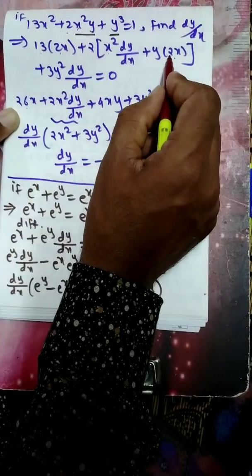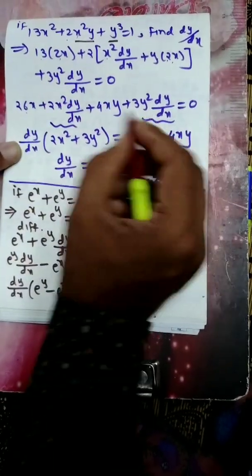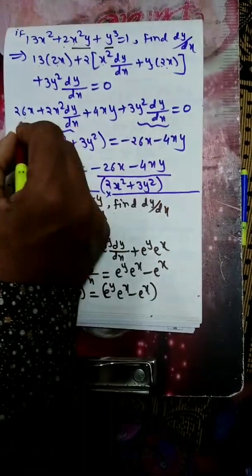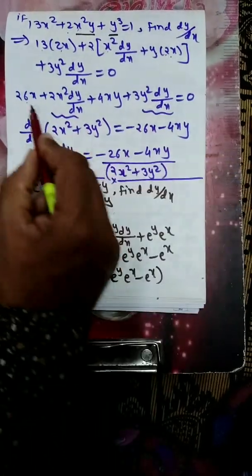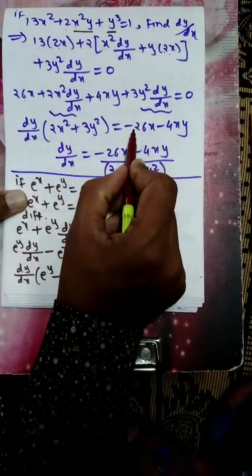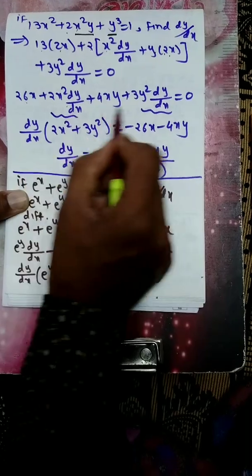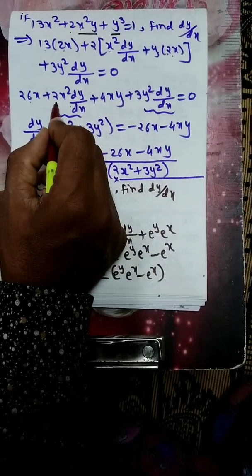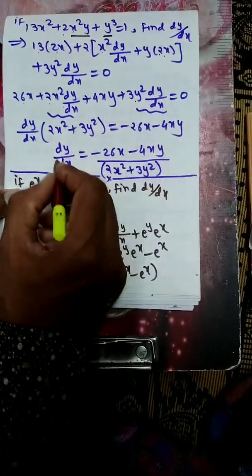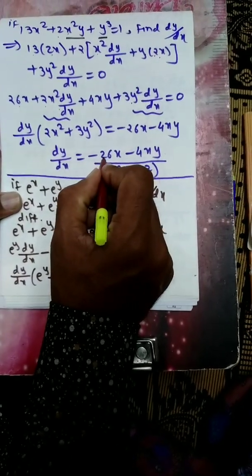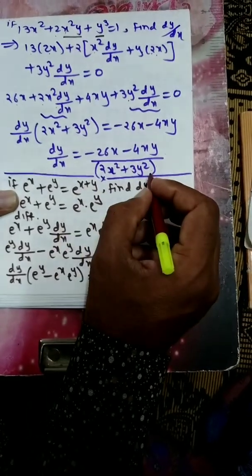So: 26x + 2(x² dy/dx + 2xy) + 3y² dy/dx = 0, giving 26x + 2x² dy/dx + 4xy + 3y² dy/dx = 0. Collecting dy/dx terms: (2x² + 3y²) dy/dx = -26x - 4xy. Therefore dy/dx = (-26x - 4xy) / (2x² + 3y²).